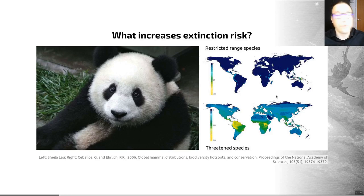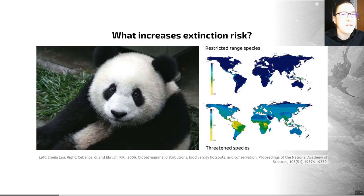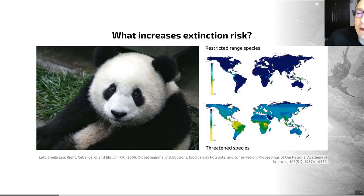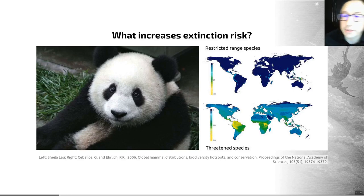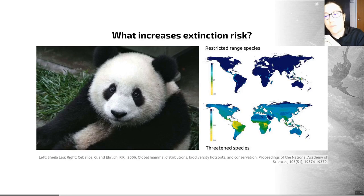A really good example of specialism is the panda — it's very, very cute, but really, really specialised. It's evolved towards eating bamboo, which is a very, very restrictive diet, and that's what makes it at risk of extinction. Reproductive rate is also a very strong factor on extinction risk: low rates of reproduction increase risk, and they are linked to body size and population density — again, the panda is a good example. Range size is also a very good predictor of extinction risk.